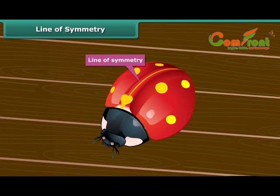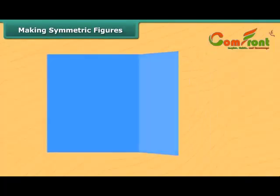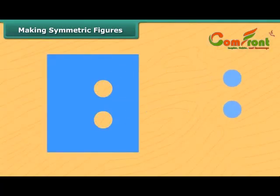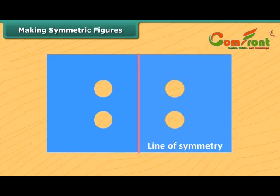Take a piece of cloth and fold it into halves. Now cut two small circles from the middle of this piece. After unfolding, you can see a symmetric pattern that has a line of symmetry along which it can be cut into two identical parts.